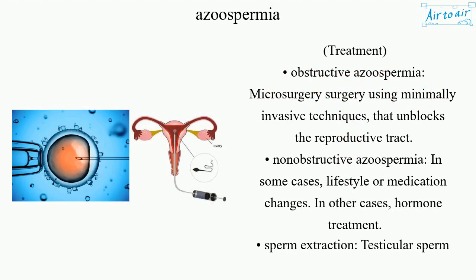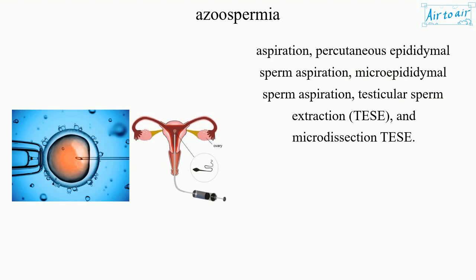Treatment for obstructive azoospermia involves microsurgery using minimally invasive techniques that unblock the reproductive tract. For non-obstructive azoospermia, in some cases lifestyle or medication changes are used; in other cases, hormone treatment or sperm extraction techniques are employed, including testicular sperm aspiration, percutaneous epididymal sperm aspiration, microepididymal sperm aspiration, testicular sperm extraction, and microdissection.